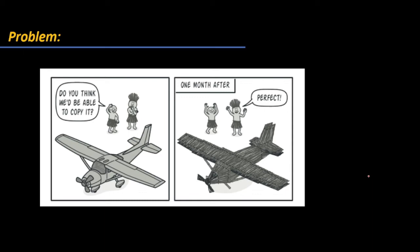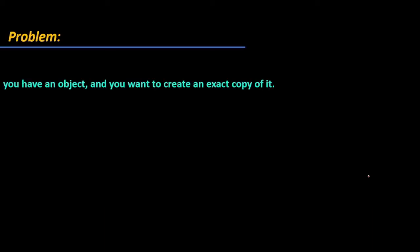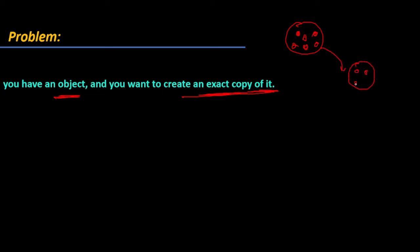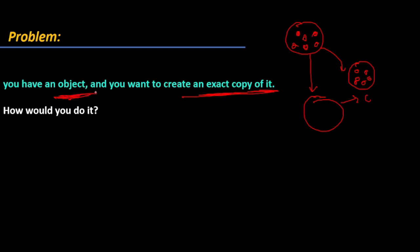Let's jump to the Java part. When you have an object with different member fields and you want to create an exact copy — not 80 or 90 percent, but an exact copy — how would you do that? If I don't know the design pattern, what I'll do is create a new object with the 'new' keyword and set each and every data member into it.